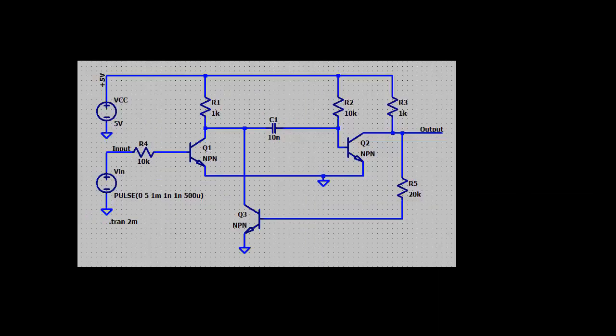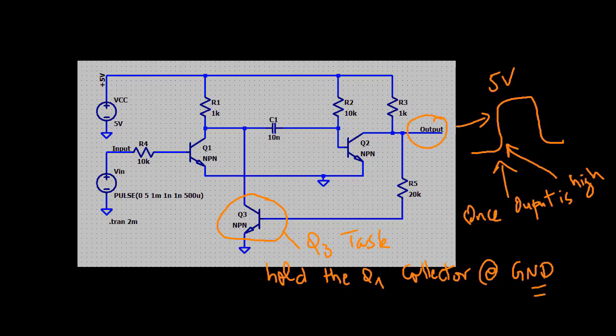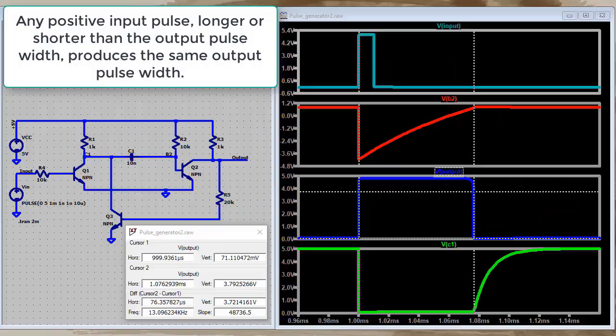To solve this problem we add to the first circuit an NPN Q3 whose task is to hold the collector of Q1 at ground once the output pulse begins regardless of what the input signal does. Now any positive input pulse longer or shorter than the desired output pulse width produces the same output pulse width.